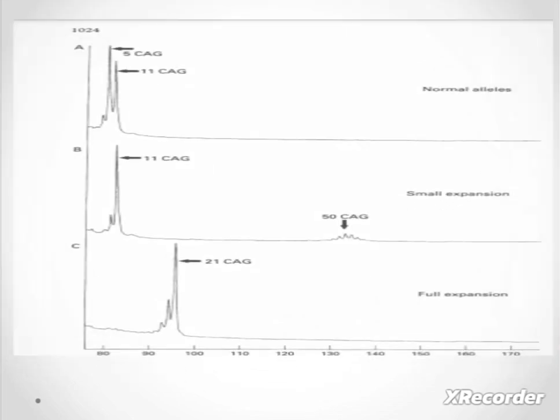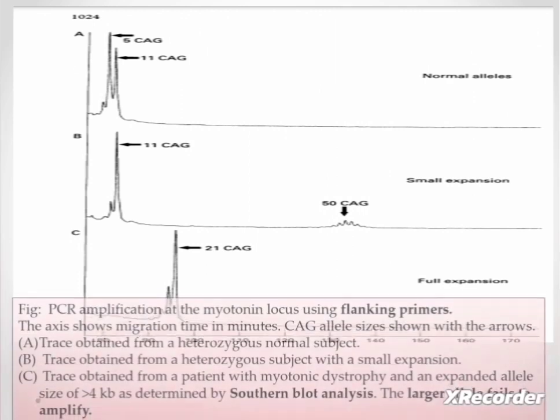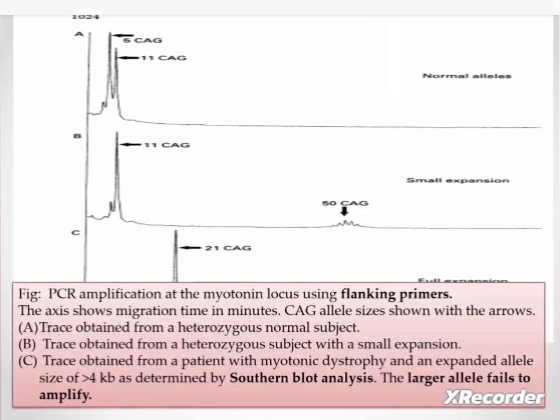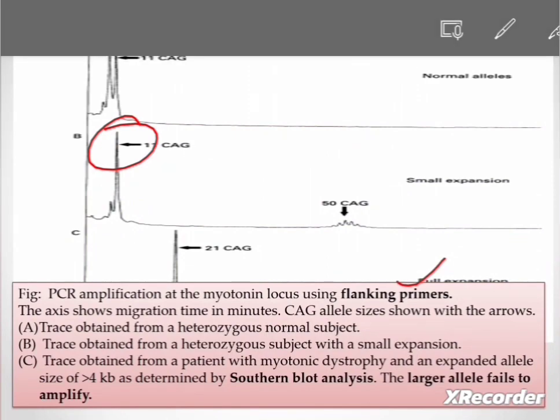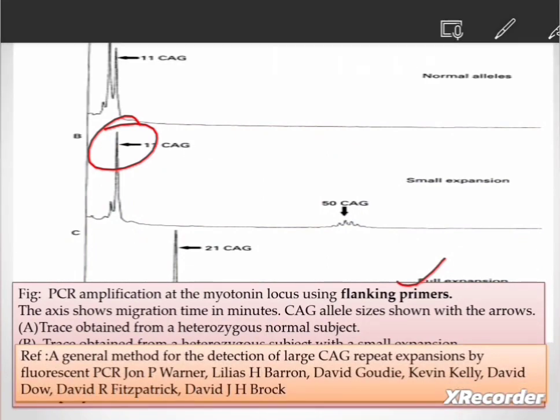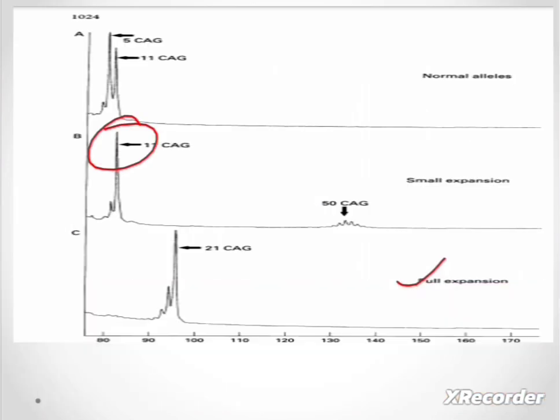The following is the result of PCR amplification of the myotonin locus using flanking primers. The axis shown here shows the migration time in minutes, and these peaks determine the allele size shown with an arrow. As we know, there are three conditions: normal, small expansions, and full expansion. In the first case, we can observe two peaks of different sizes: five and eleven, since it is a heterozygous subject.